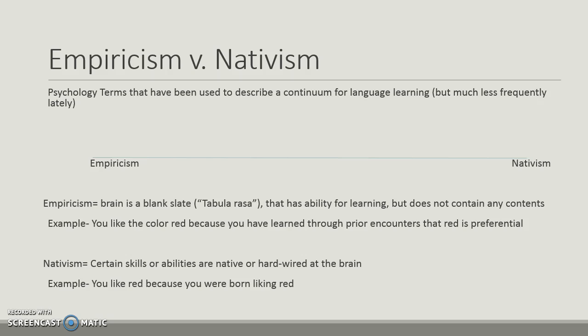Empiricism versus nativism is a common debate in the linguistic field, and these psychology terms are used to describe the continuum for language learning. Empiricism is the idea that the brain is a blank slate — the tabula rasa — with the ability for learning but no innate contents. For example, you like the color red because you've learned through prior encounters that red is preferential. Nativism argues that certain skills are native and hardwired in the brain — for example, you like red because you were born liking red.